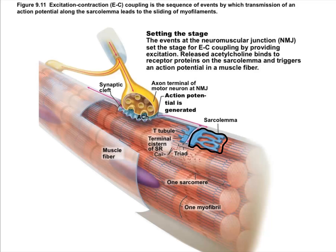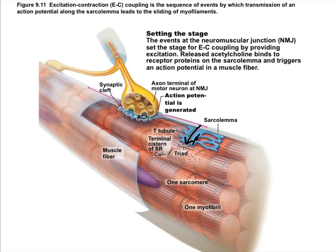The sarcoplasmic reticulum is similar to the endoplasmic reticulum in most cells but is modified here for a specific function: it acts basically as a calcium storage organelle, packed full of calcium. In its membrane are voltage-gated calcium channels. The voltage change from the action potential comes down the T tubule, spreads into the SR, opens these voltage-gated calcium channels, and calcium flows out. This calcium flowing out of the SR is the actual signal that stimulates contraction inside the muscle fiber.